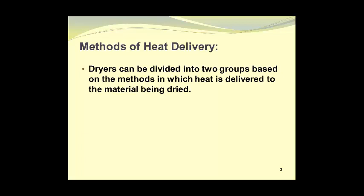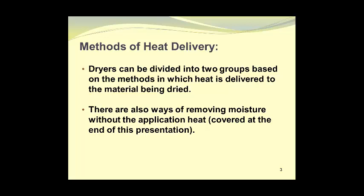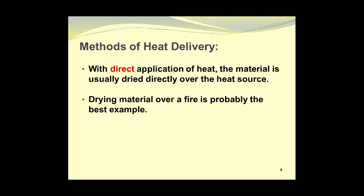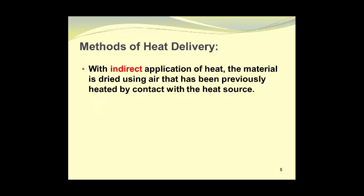First, let's take a look at the methods of heat delivery. Dryers can be divided into two groups based on the methods in which heat is delivered to the material being dried. There are also ways of removing moisture without the application of heat, and they will be covered at the end of this presentation. With direct application of heat, the material is usually dried directly over the heat source. Drying material over a fire is probably the best example.